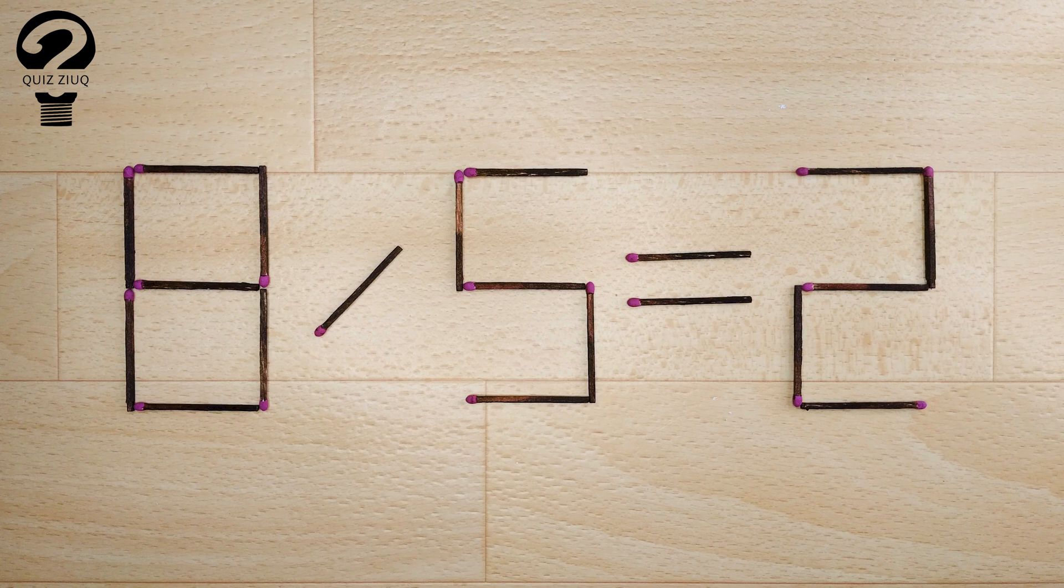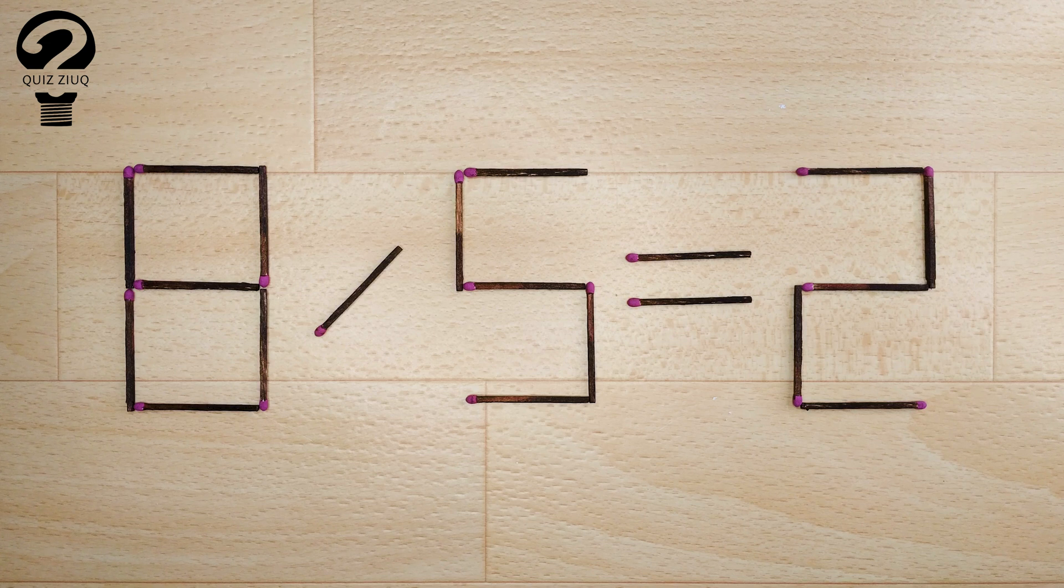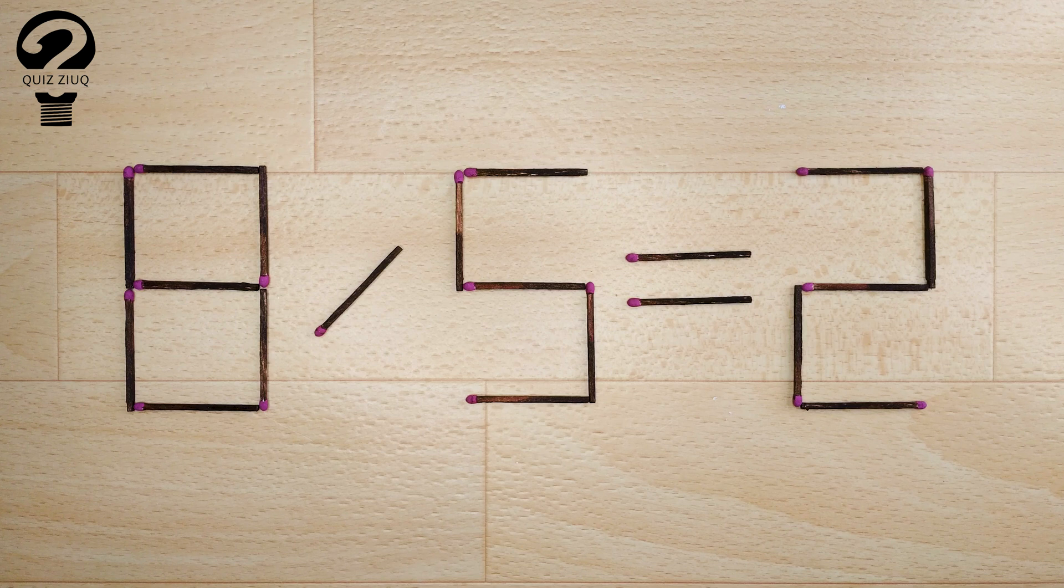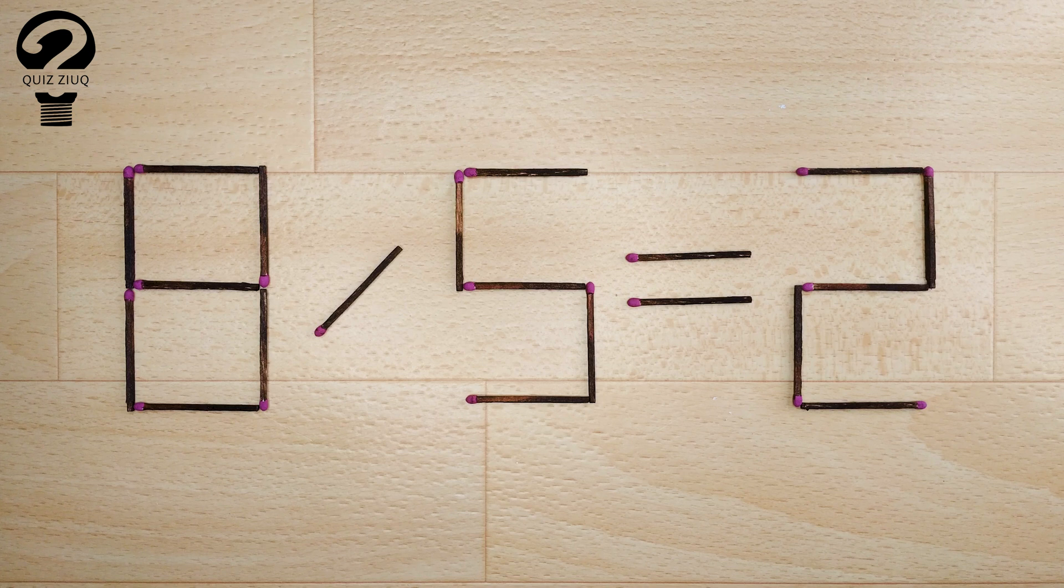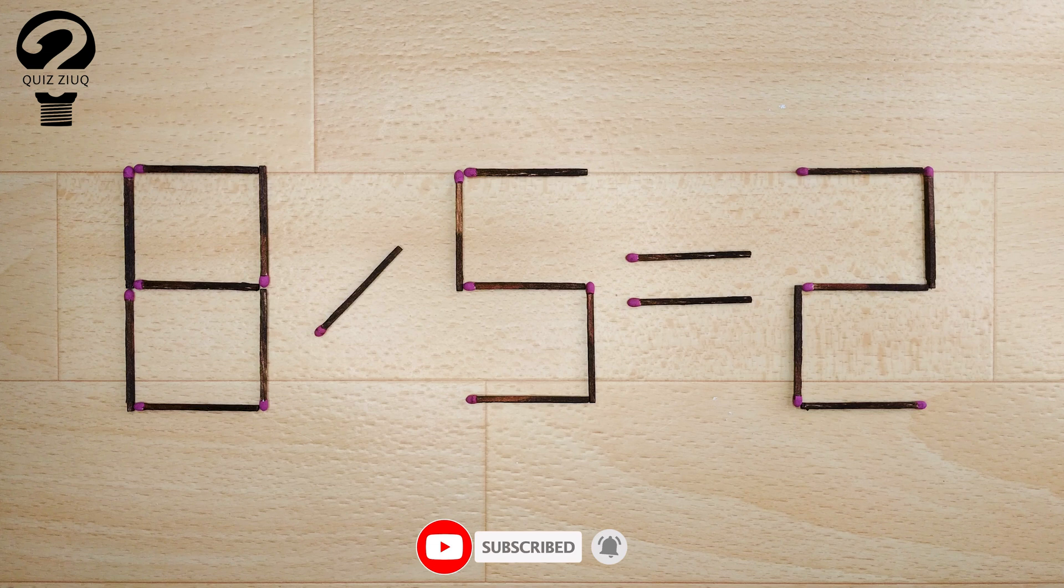Our equation is incorrect and we need to move two matches to make our equation correct. This is a fairly simple math problem that both children and adults can easily solve. Those who think logically will have no problem solving this puzzle. It will be an interesting exercise in logical thinking for you.